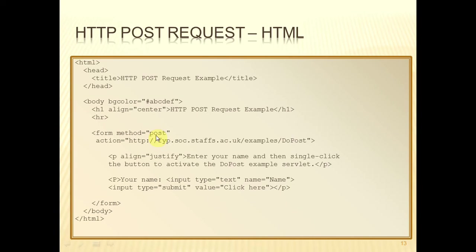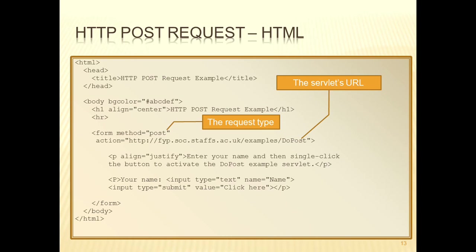With this example, to make our request a POST request, it's as simple as changing METHOD equals GET to METHOD equals POST. We have to put in the URL of the servlet — and I emphasize it's the URL of the servlet, not the servlet class name. I'll talk on another occasion about how the container decodes that URL and works out which actual class is to be executed.